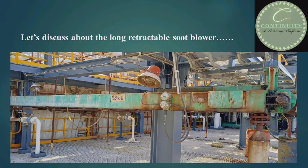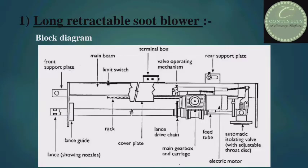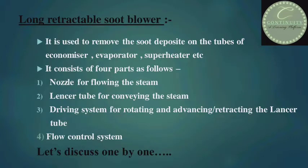Let's discuss about the long retractable soot blower. Look at the figure — this green object is the long retractable soot blower. This is the block diagram of the long retractable soot blower; all parts of this soot blower are mentioned here. Long retractable soot blower is used to remove the soot deposit on the tubes of the economizer, evaporator, superheater, etc. It consists of four parts: first, nozzle for flowing the steam.